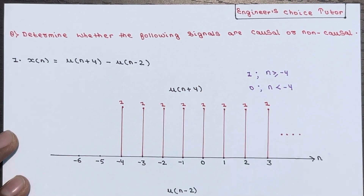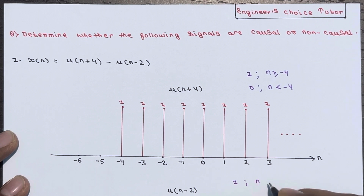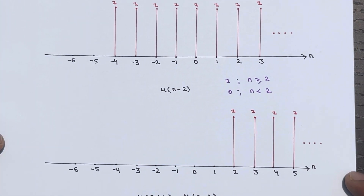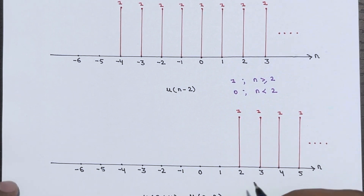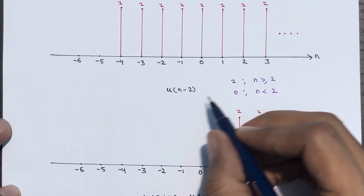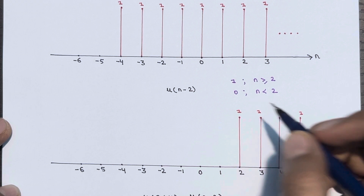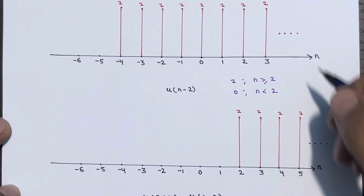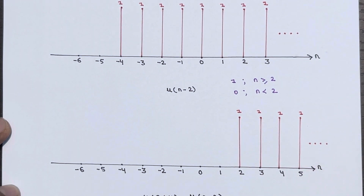So u of n minus 2 means you will get the value 1 for n greater than equal to 2, and 0 for n smaller than 2. If you plot the graph for this, the signal starts from n equal to 2. For n greater than equal to 2, the amplitude for u of n minus 2 is 1. It is basically a delayed version of u of n.